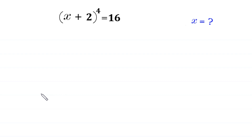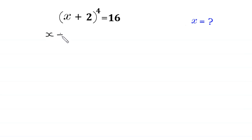Hello, welcome to how to solve this very nice algebra equation: (x + 2) to the power 4 equals 16. We need to find all possible values of x. Let's start by moving this 16 to the left side, so we get (x + 2)⁴ minus 16 equals 0.